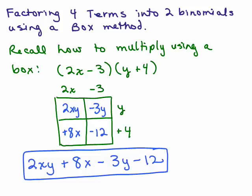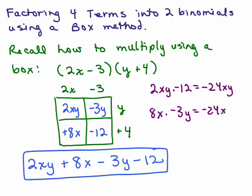There's something important to notice here. If you look across the diagonals, in the first diagonal we have 2xy times negative 12, which happens to be negative 24xy. The second diagonal we've got 8x times a negative 3y, which is negative 24xy. So this is an important point. When you use the box method, if you multiply the numbers on one diagonal, you'll get the same product as if you multiply the numbers on the other diagonal.